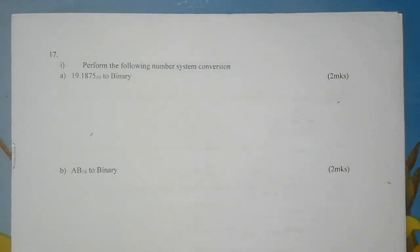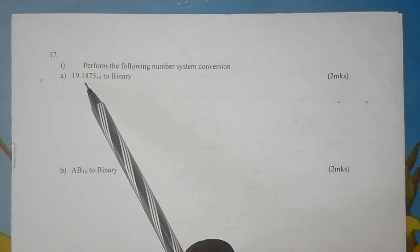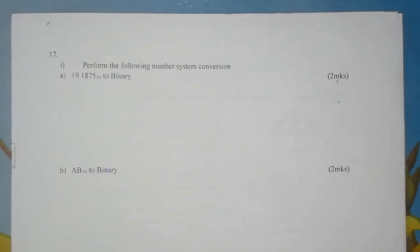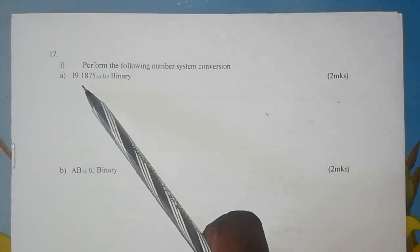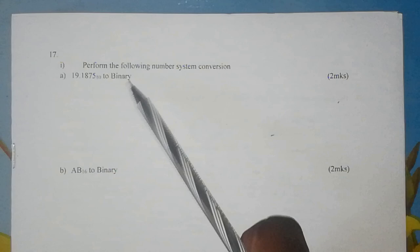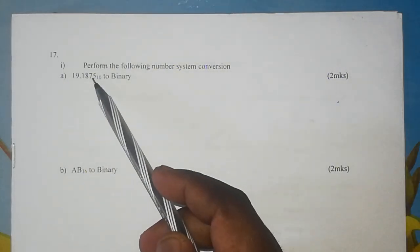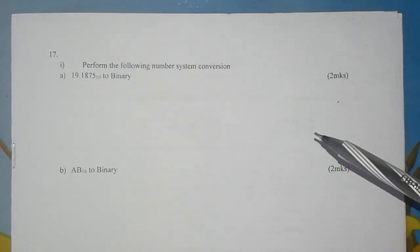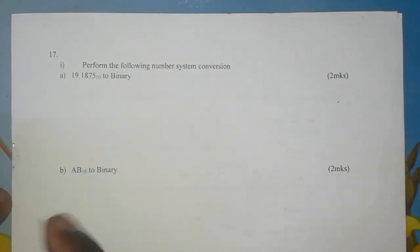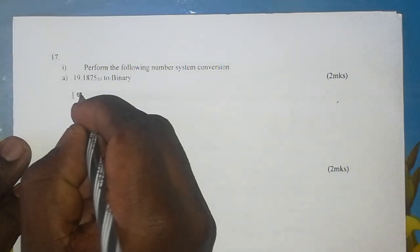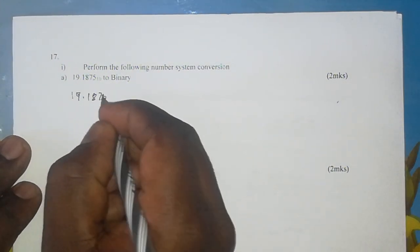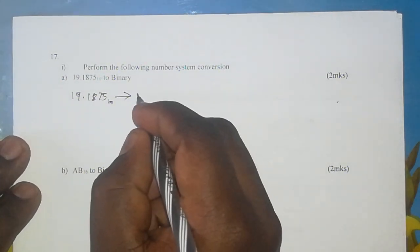Hello, once again. We have yet another sample question to go through, and this time we have conversion of number systems. This is question 17 in one of our papers. In part (a) we have 19.1875 base 10 to binary, so I'm going to show you the steps you will take to convert a decimal number to a binary number. The first thing to do is rewrite your number in base 10 and we are converting this to base 2.